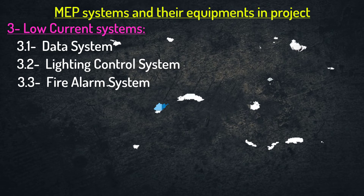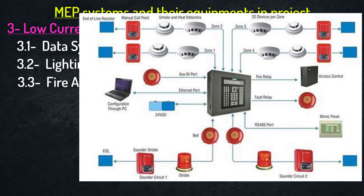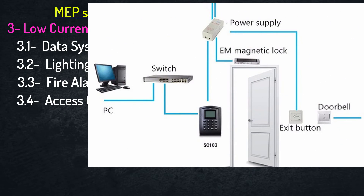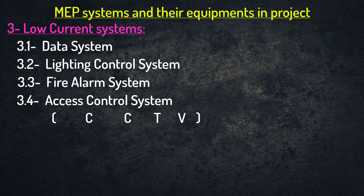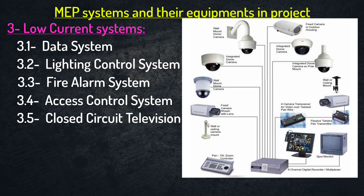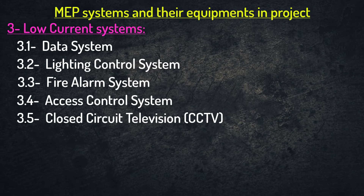Third, alarm system. Fourth, access control system. Fifth, closed circuit television system or CCTV. There are other low current systems which you can find in your project, but I mentioned only the most common systems that can be found in any project and can be integrated with the BMS system.